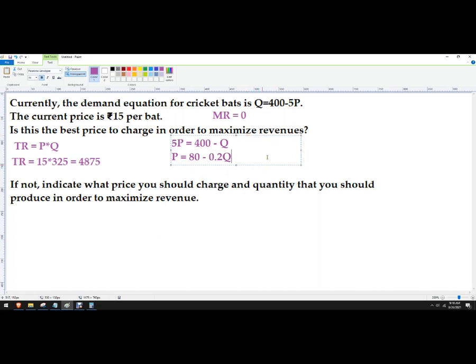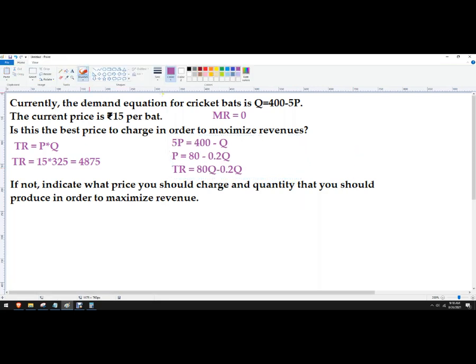And now we want to know what total revenue is. So total revenue is just price times quantity. We know price. So we're going to multiply by quantity. And that's 80Q minus 0.2Q squared. So this is our total revenue.